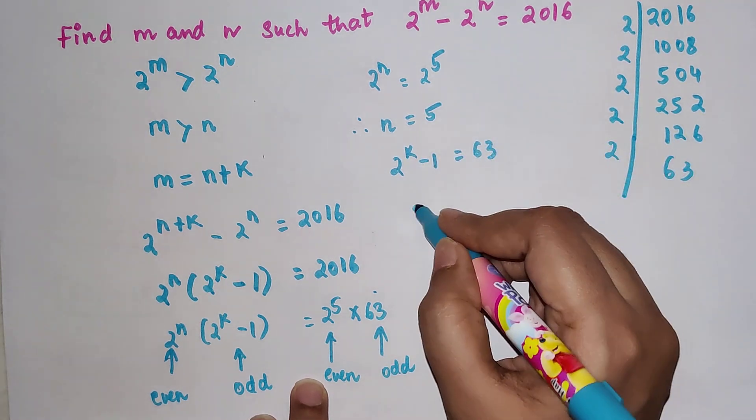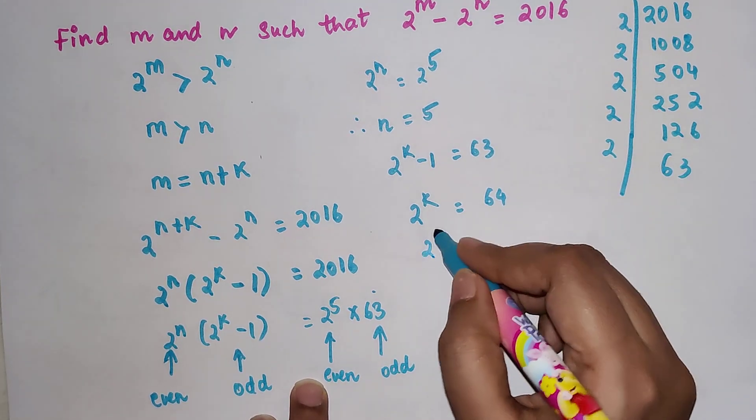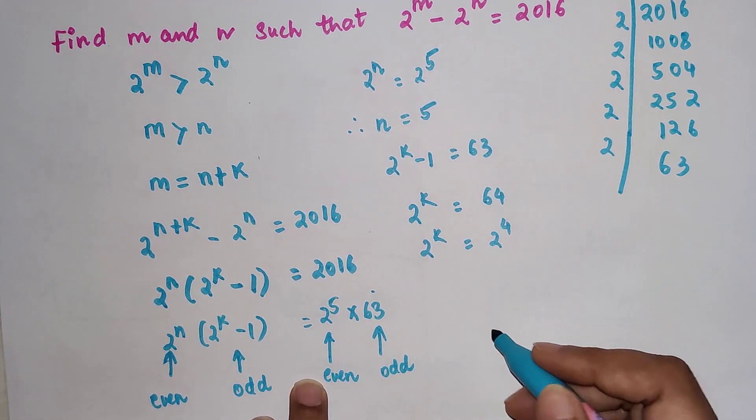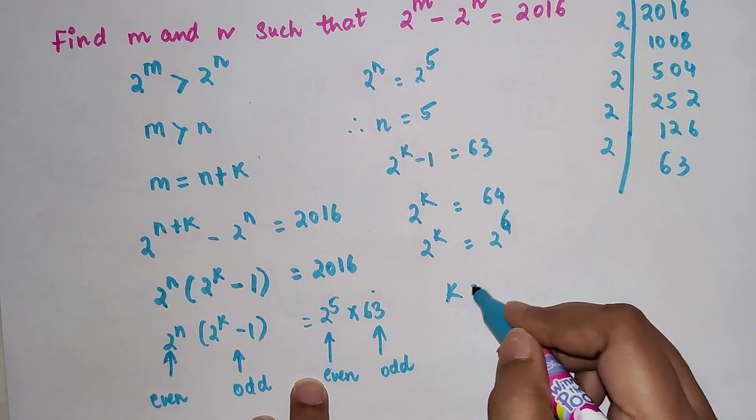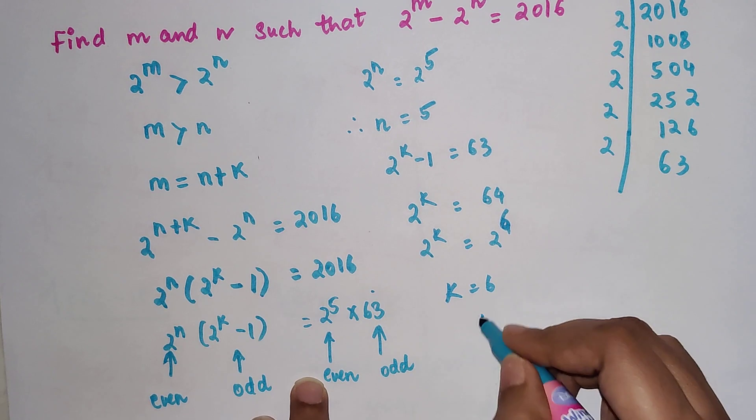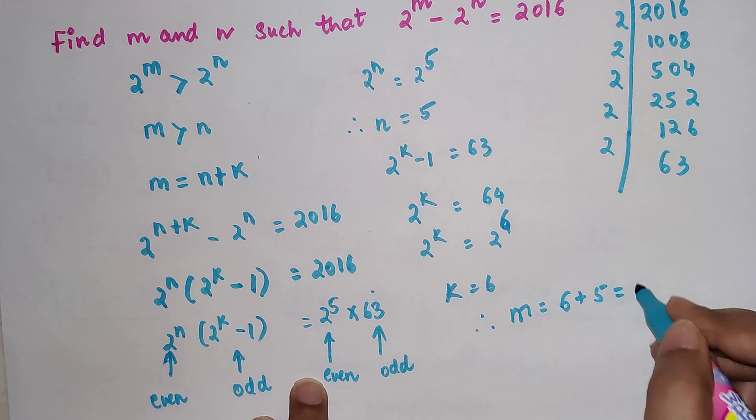And I can say 2 raise to k minus 1 is equal to 63. So 2 raise to k is equal to 64, so this is nothing but 2 raise to 6. So k is equal to 6, so therefore m is equal to 6 plus 5, that is equal to 11.